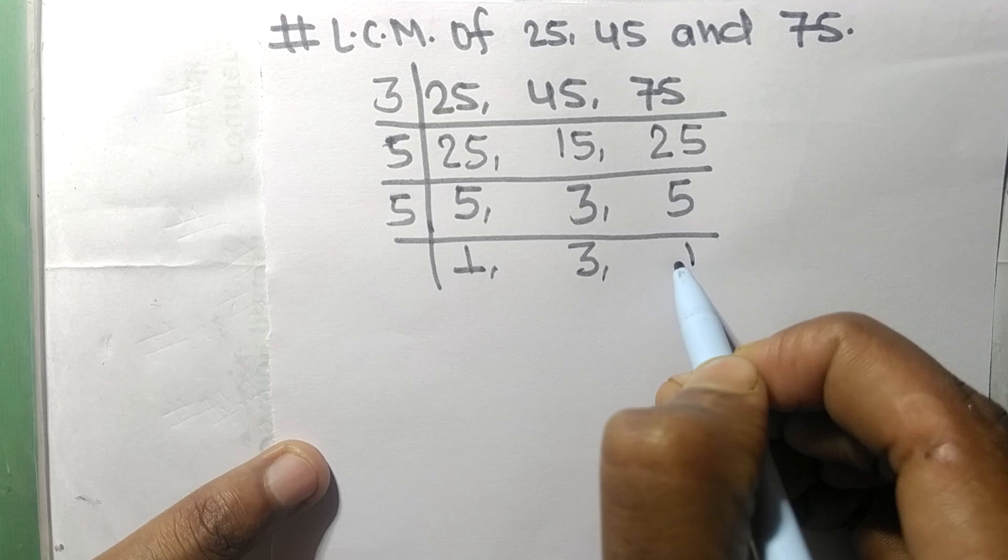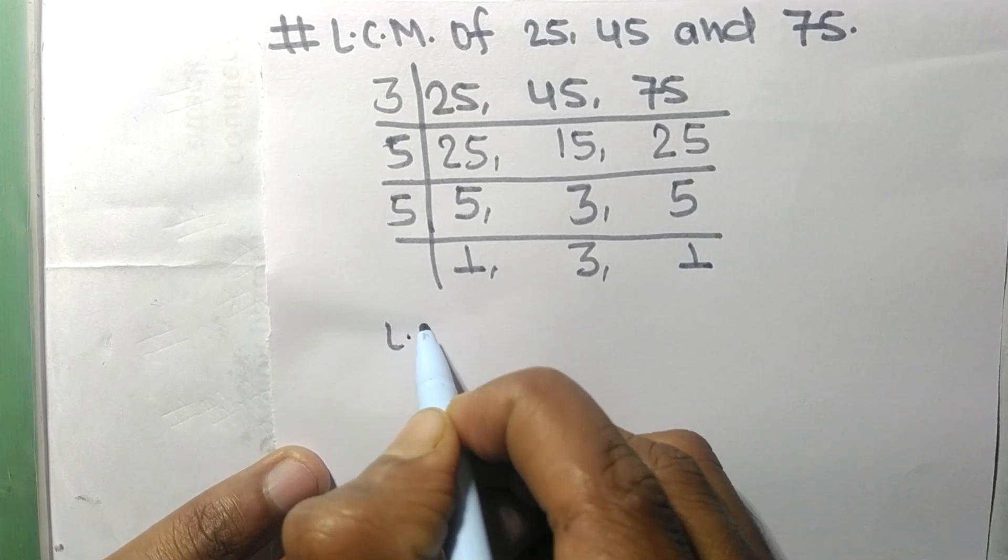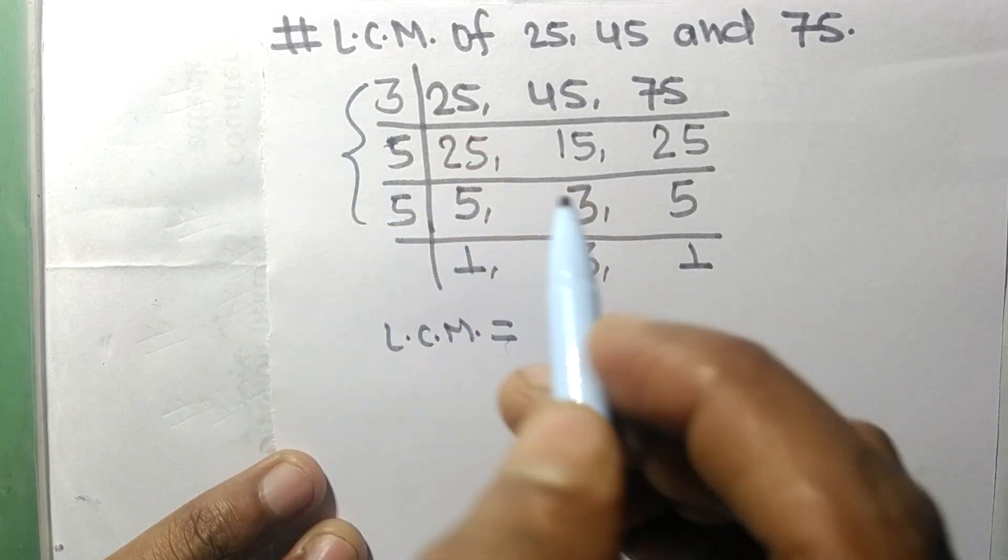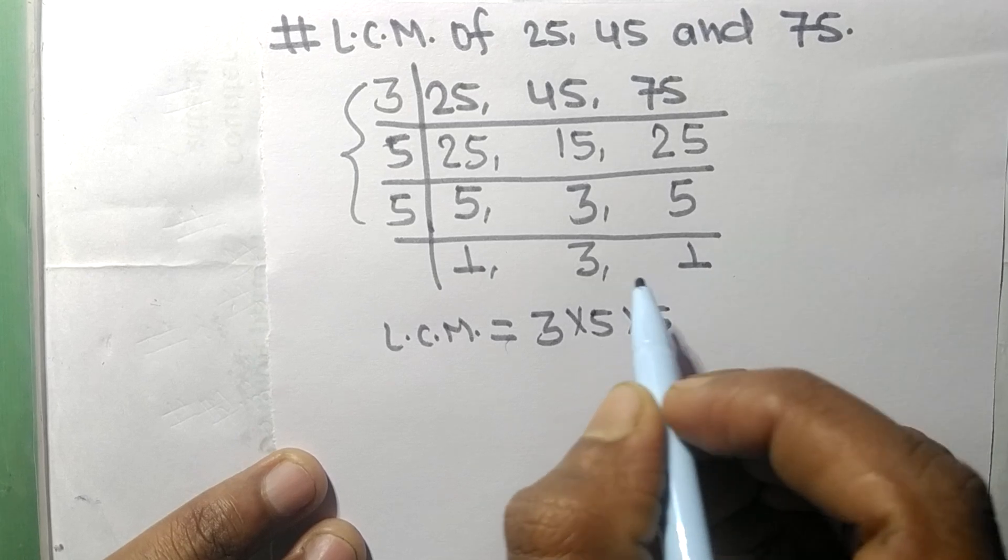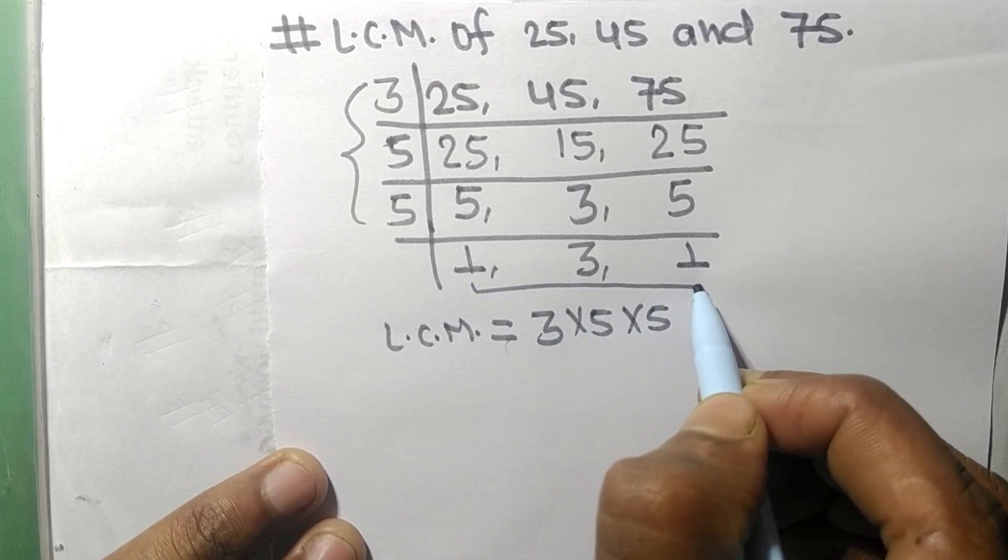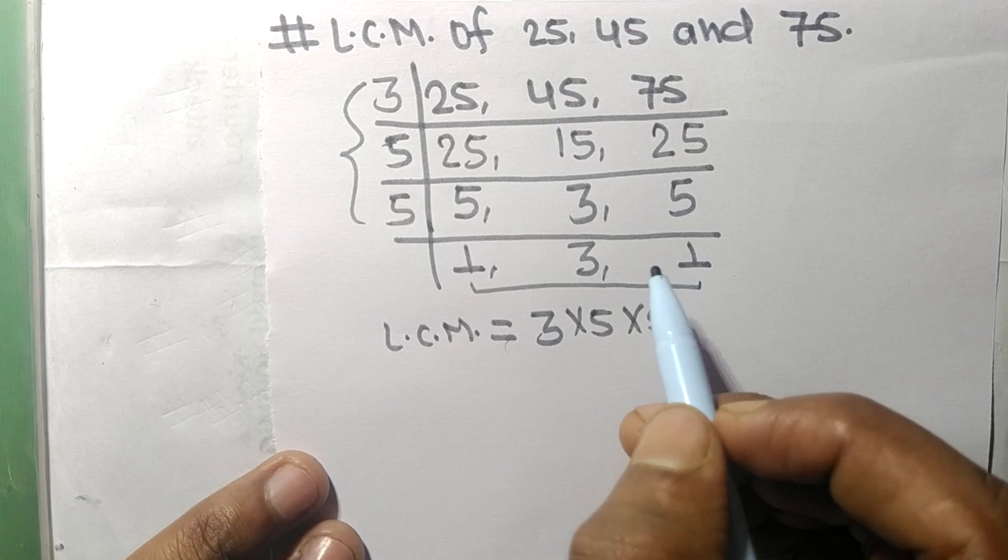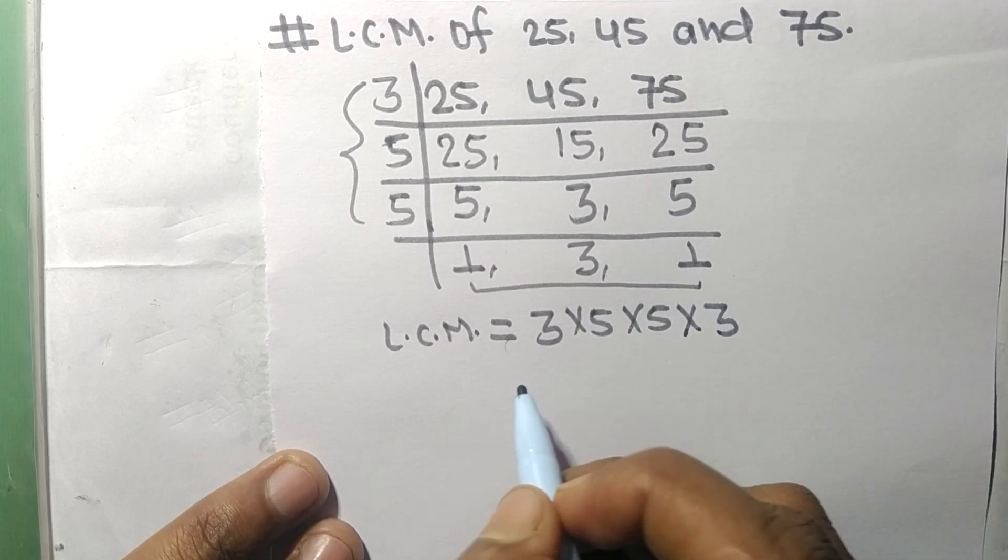So now the LCM is equal to, from this side, 3 times 5 times 5. And from this side we choose the numbers greater than 1, that is 3, so multiplied by 3.